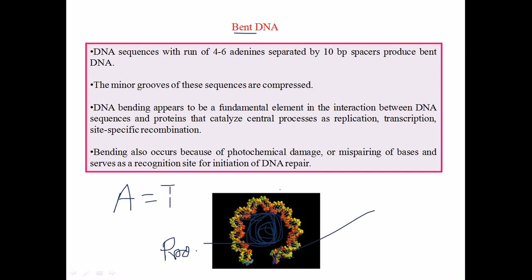When DNA is bent, the major grooves face outward and the minor grooves face inward, as we can see in the picture. The yellow color strand shows the major groups on the outside, while the parts closer to the red color are mostly minor groups. As DNA bends, these major grooves get broadened while the minor grooves become really narrow — this is how DNA bending is structurally possible.